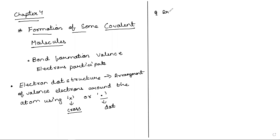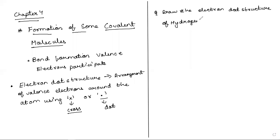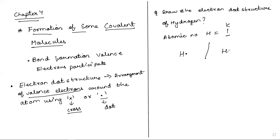For example, draw the electron dot structure of hydrogen. The atomic number of hydrogen is one, so it has one electron in its valence shell. In the electron dot structure, we represent valence electrons — hydrogen has one valence electron. So you simply draw either one dot or one cross. This is the electron dot structure of hydrogen.